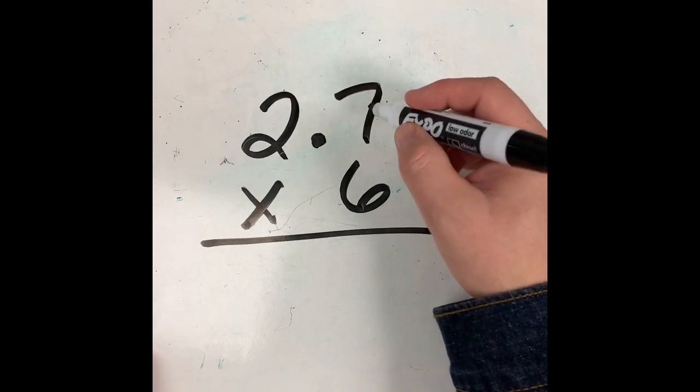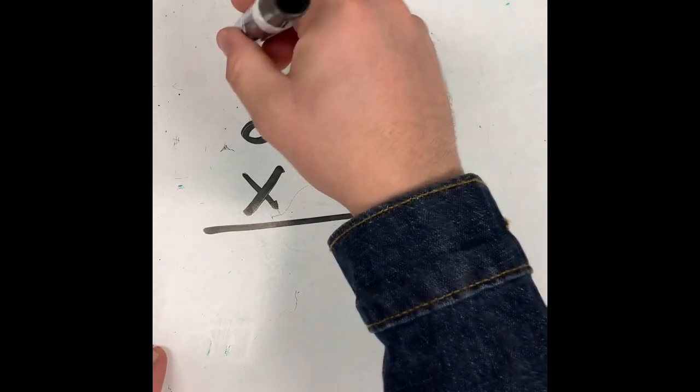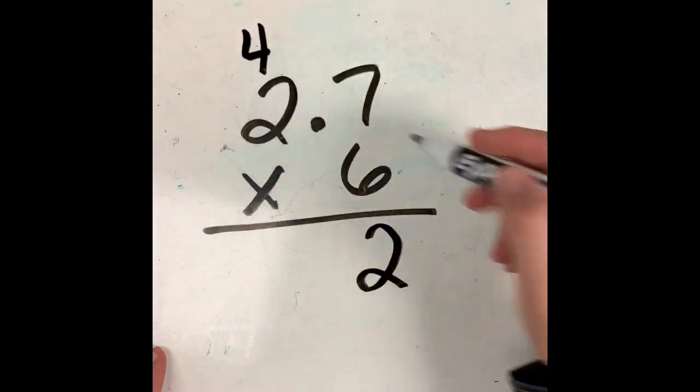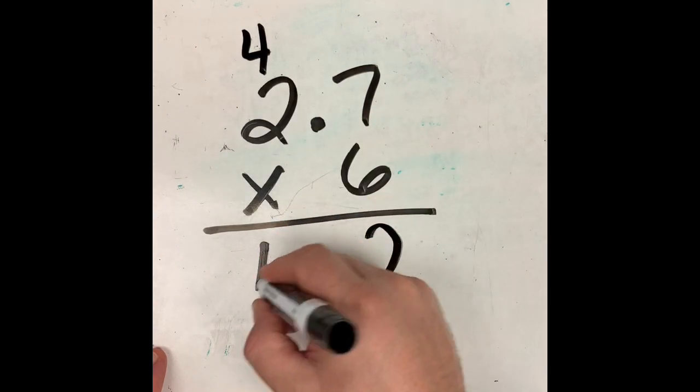So, 6 times 7 is going to be 42. Drop my 2, and I'll carry my 4 up. You should have done 6 times 2 next, which will give you 12, plus 4 more, which will give you 16.